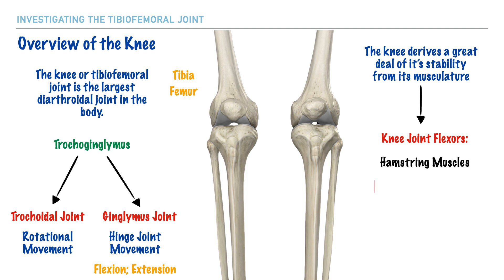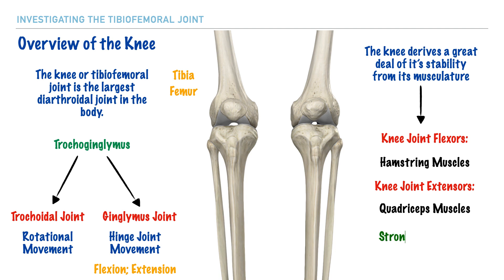There are also strong ligamentous structures that provide stability to the knee joint. These include the anterior cruciate ligament, posterior cruciate ligament, medial collateral ligament, and the lateral collateral ligament. We'll explore these further in just a moment.